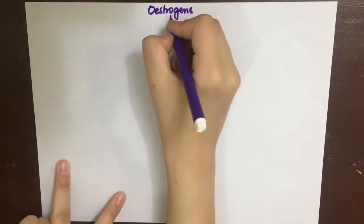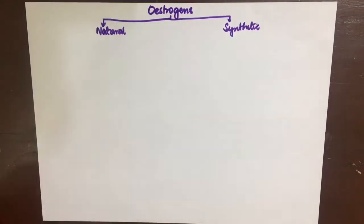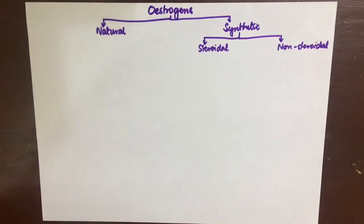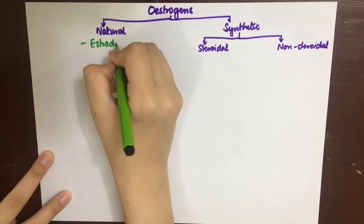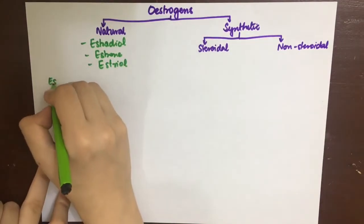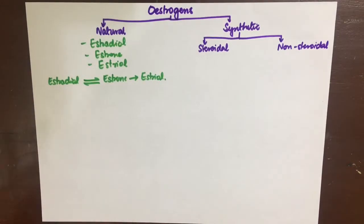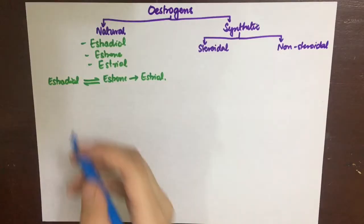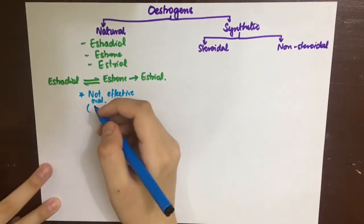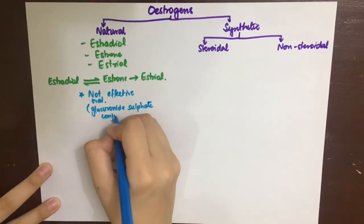Estrogens can be divided into those that occur naturally and the synthetic analogues. The naturally occurring estrogens are estradiol, which is the most potent and most abundant form, and estrone and estriol, which are metabolic products of estradiol in the liver. These naturally occurring estrogens are not effective orally because they have high first-pass metabolism — they are metabolized by glucuronide and sulfate conjugation in the liver and then excreted in the urine and bile.